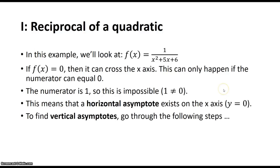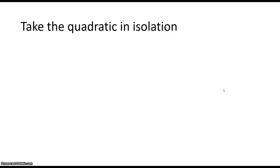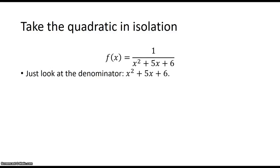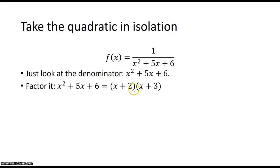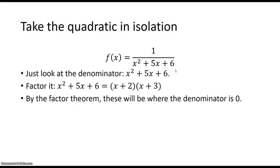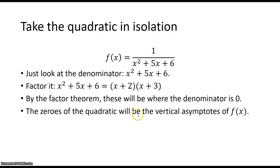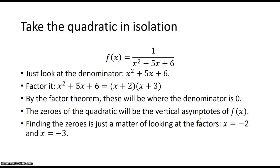To find the vertical asymptotes, we can take the quadratic in isolation. We're just going to look at the denominator, x squared plus 5x plus 6. We can factor it to give us the factors x plus 2 and x plus 3, and we discover that this quadratic has zeros at negative 2 and negative 3. Which means that is where the denominator will be 0, and we'll end up with 1 over 0 when x equals negative 2 or x equals negative 3. That is the location of the vertical asymptotes of f of x.